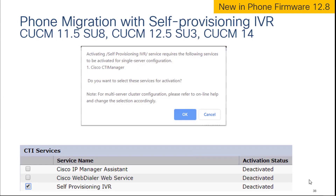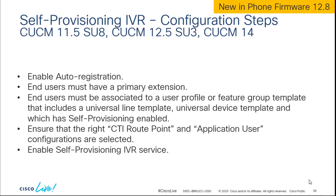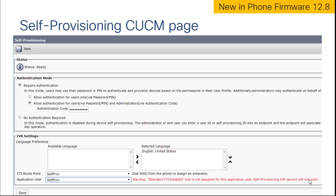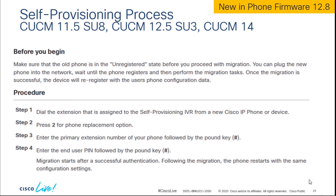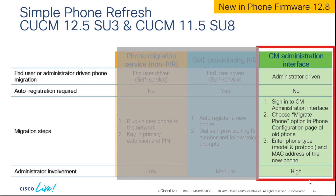There are some additional steps to get the IVR method working. You need to enable the self provisioning IVR service, set up a CTI route point, and a CTI application user for that route point. If you've ever used a self provisioning IVR, none of this is significantly different — it's almost identical. One common error is that the standard CTI enabled role needs to be provisioned for the application user, so be mindful of that. You hit number 2 for the phone replacement option, followed by the primary extension with the pound key, and the end result will be the same.